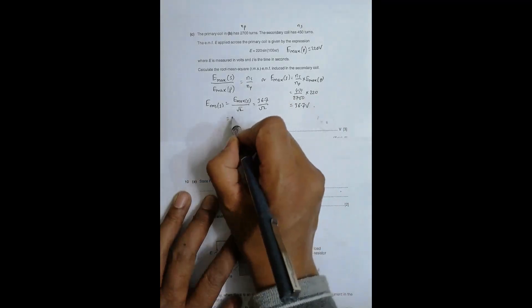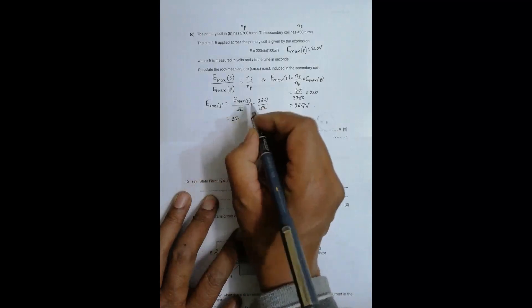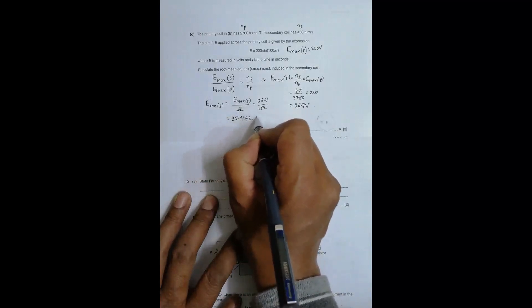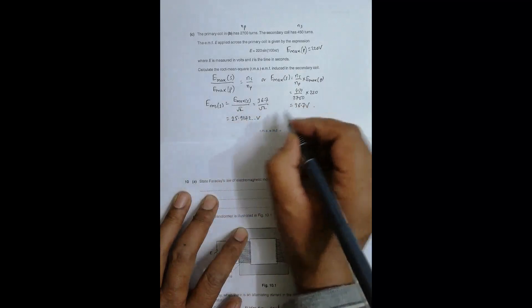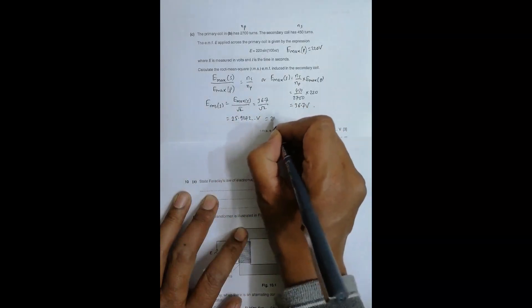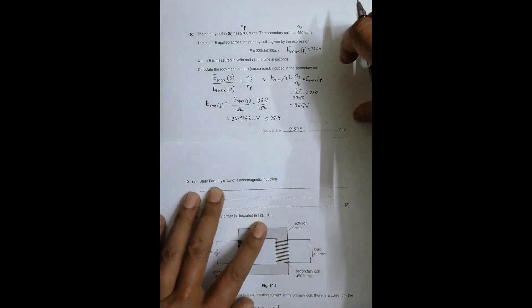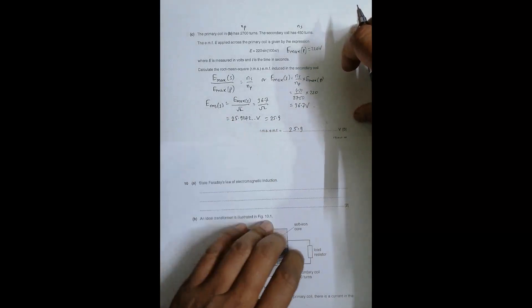This equals 36.7 divided by 2 power 0.5, which becomes 25.9272 volts. When we write it in 3 significant figures, it becomes 25.9 volts.